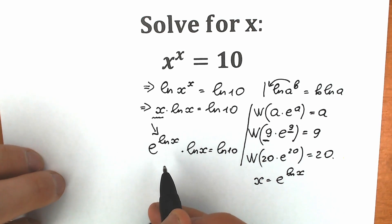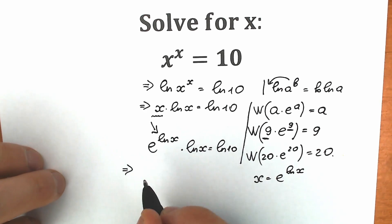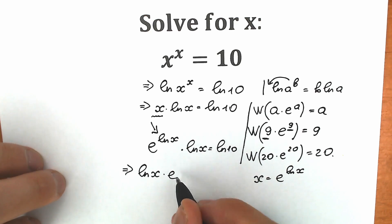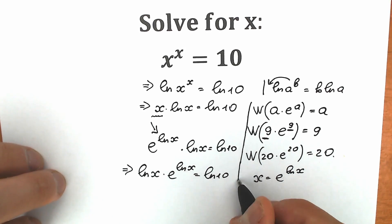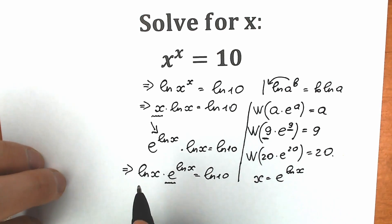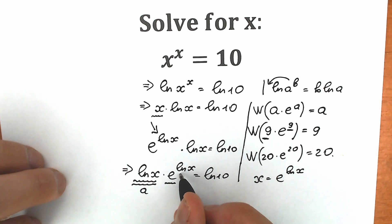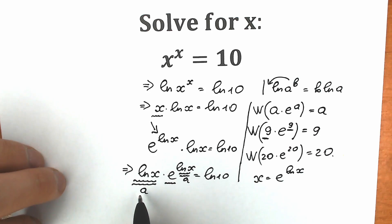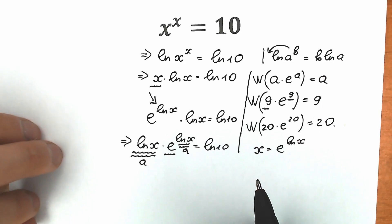Right now let's change positions: let's write natural log x first and this expression second. As a result we have natural log x times e to the power natural log x equal to natural log 10. Looking closely at the left side — we have e. We can see that natural log x plays the role of a, and we have the same natural log x in the exponent. So the left side has the structure a times e to the power a, which is perfect for applying Lambert W function.